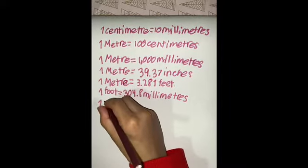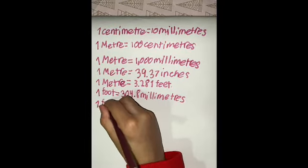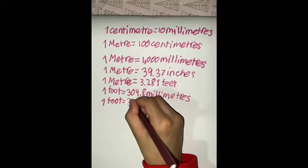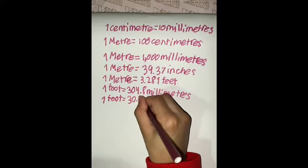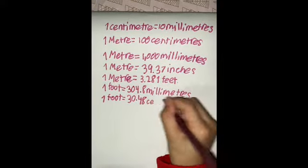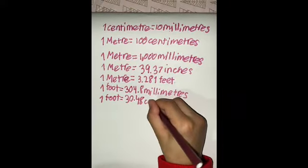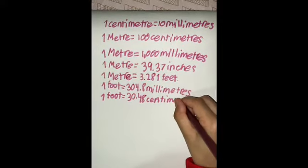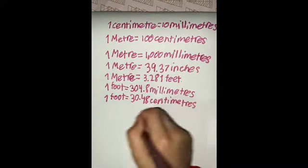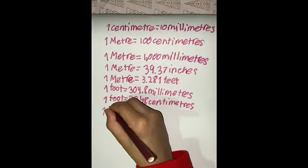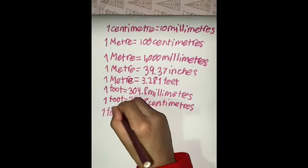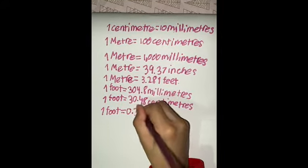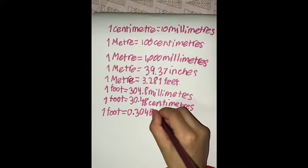And one foot equals 30.48 centimeters. And then we have one more foot. One foot equals 0.3048 meters.